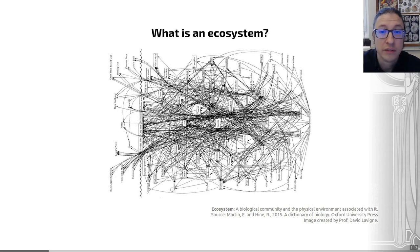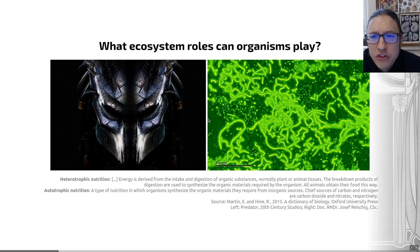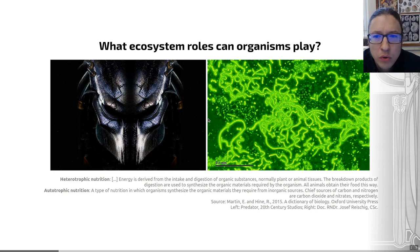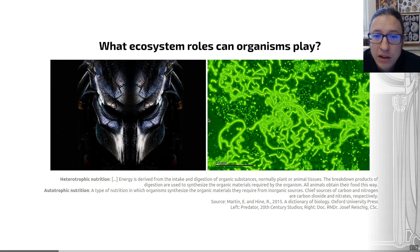When looking at the fossil record, it's useful to think of each species in an ecosystem as occupying a niche, which I'll define on the next slide. Organisms have different ways of living within their ecosystem — these are ecological distinctions between species. A key example is how organisms get their energy and organic material from their environment, which is a really good expression of just one part of what makes up a species' niche.